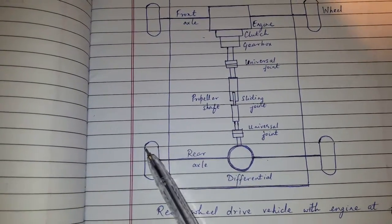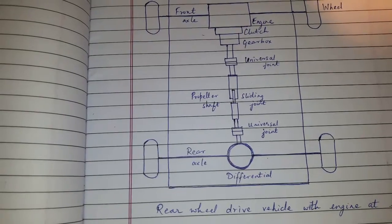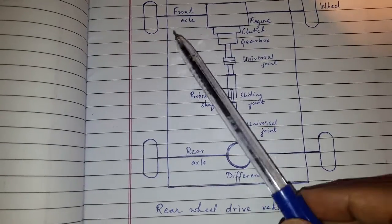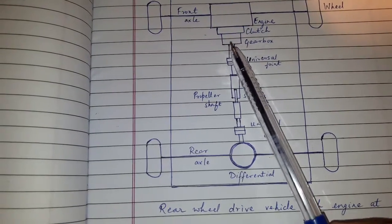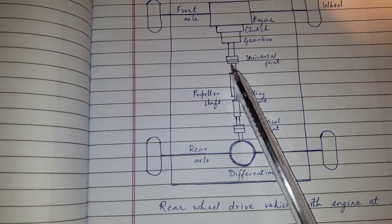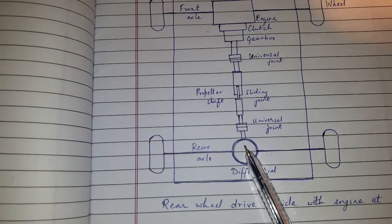The drive chain is as follows: engine, clutch, gearbox, universal joint, propeller shaft, differential, rear axle, wheel.